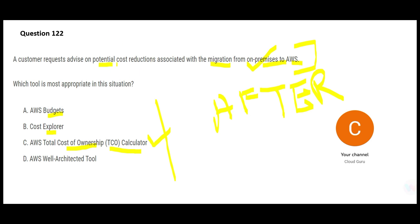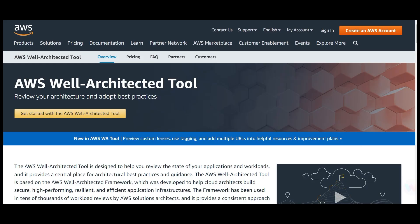The question is about potential cost reductions before the move, so A and B are both wrong — they are for 'after.' TCO is for 'before.' Before you move into the flat, you want to know the cost. AWS Budgets is for after you've moved in and are trying to control your operating costs.